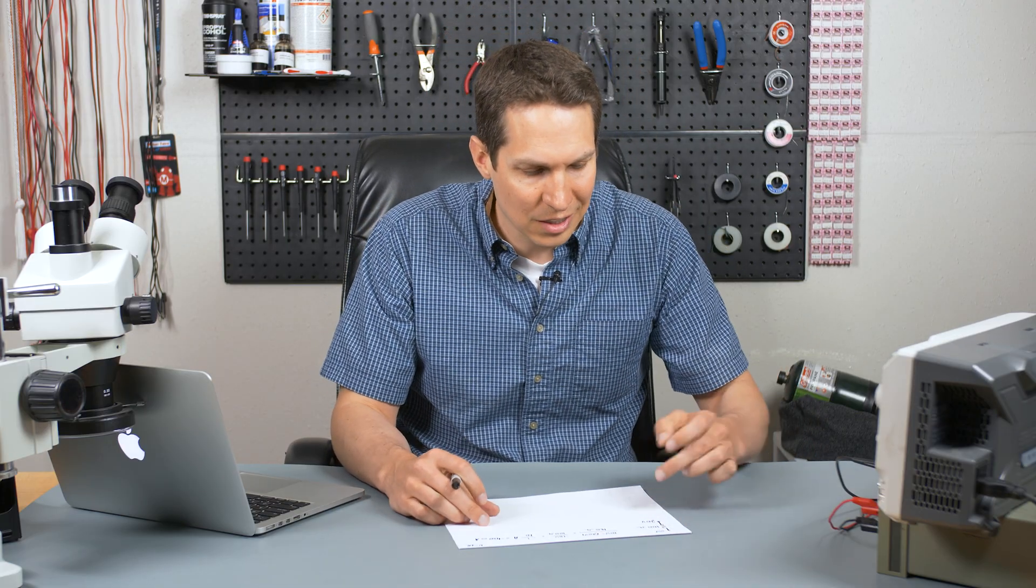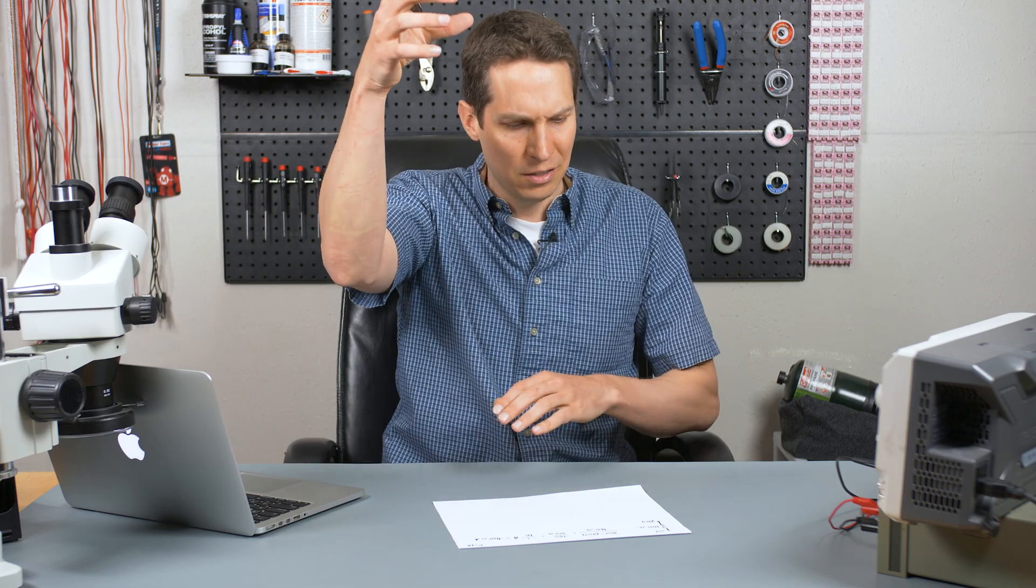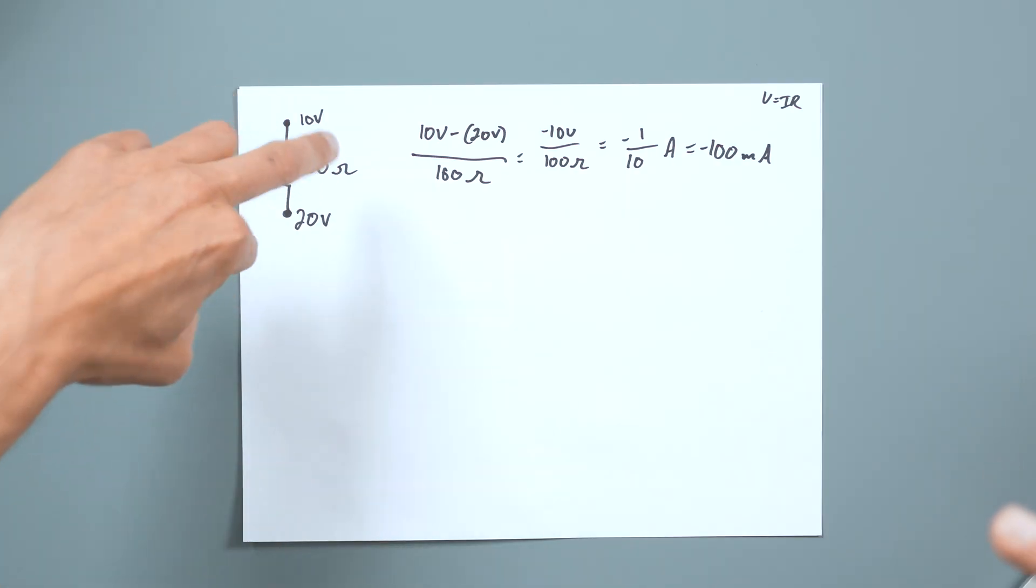Okay, so negative 100 milliamps, what does that mean? Well, that means that we looked at this and the way it's set up, you'd imagine, okay, glass is up here. But actually, this is completely flipped, where the higher potential is down here.